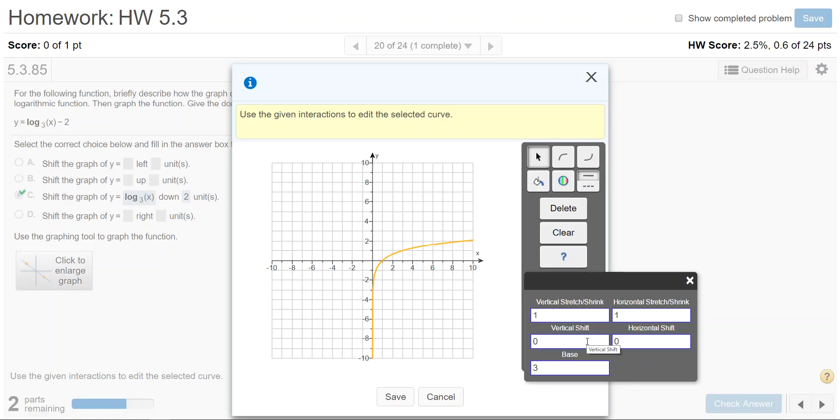Now in this one we want to go to the box which has a vertical shift and we want to backspace over the 0 and put negative 2 to make it go down 2. And then if I click in the base box you'll see that the graph automatically shifts down 2 from its original position.